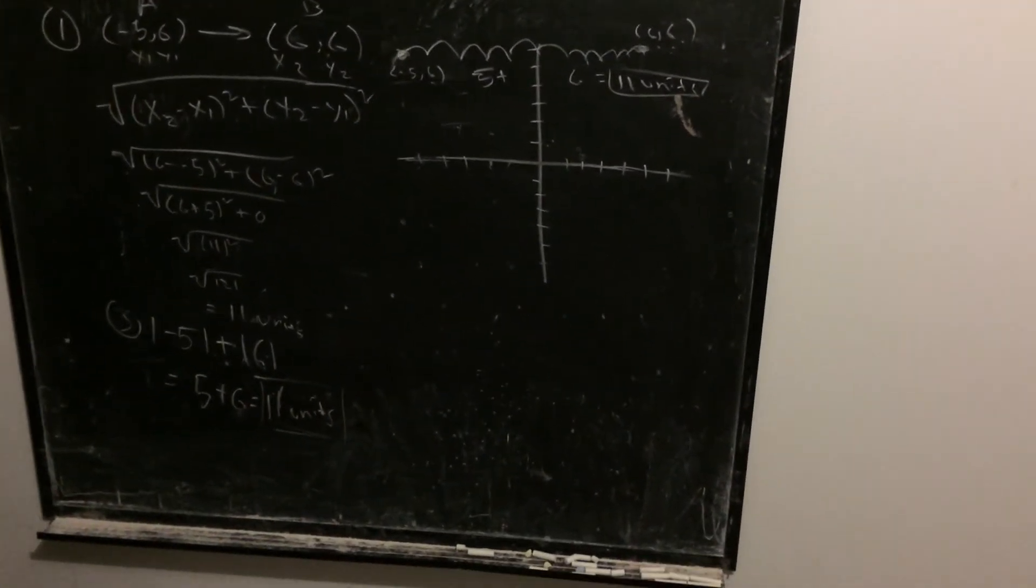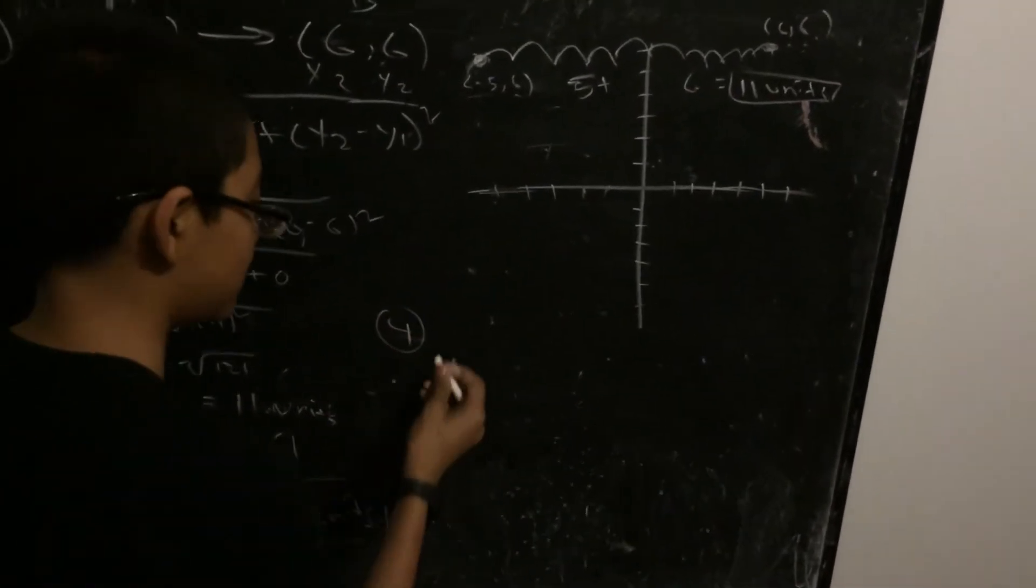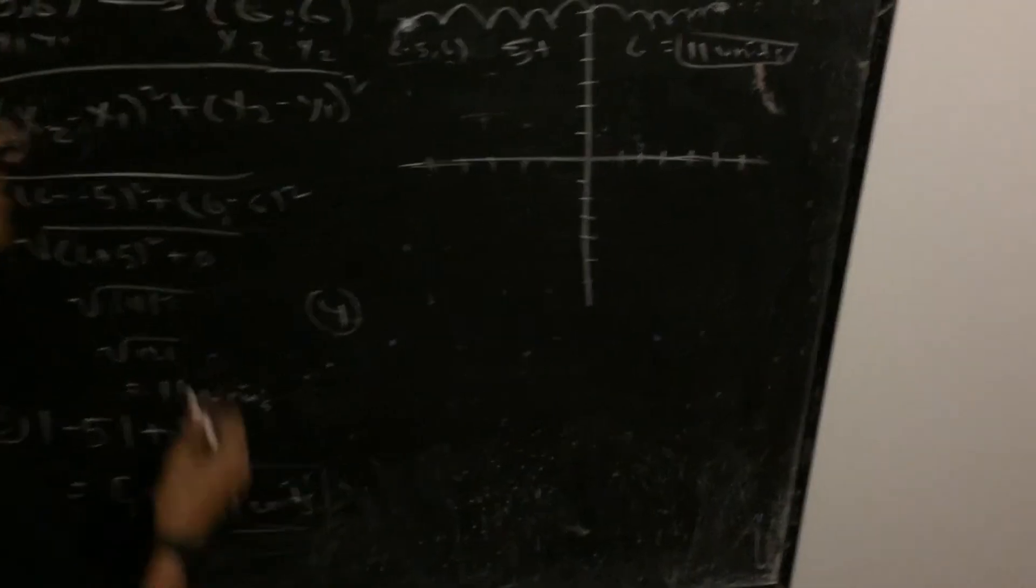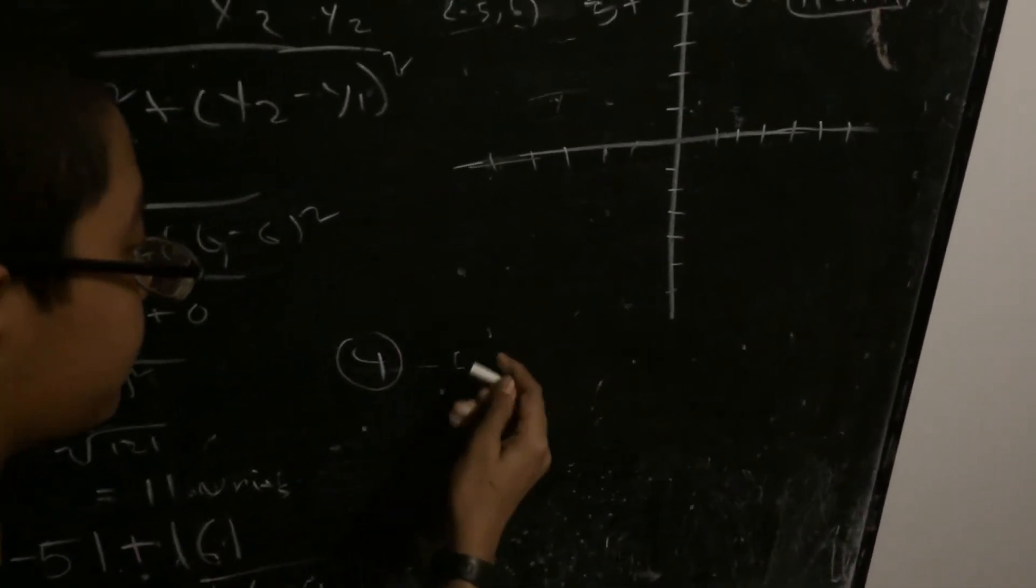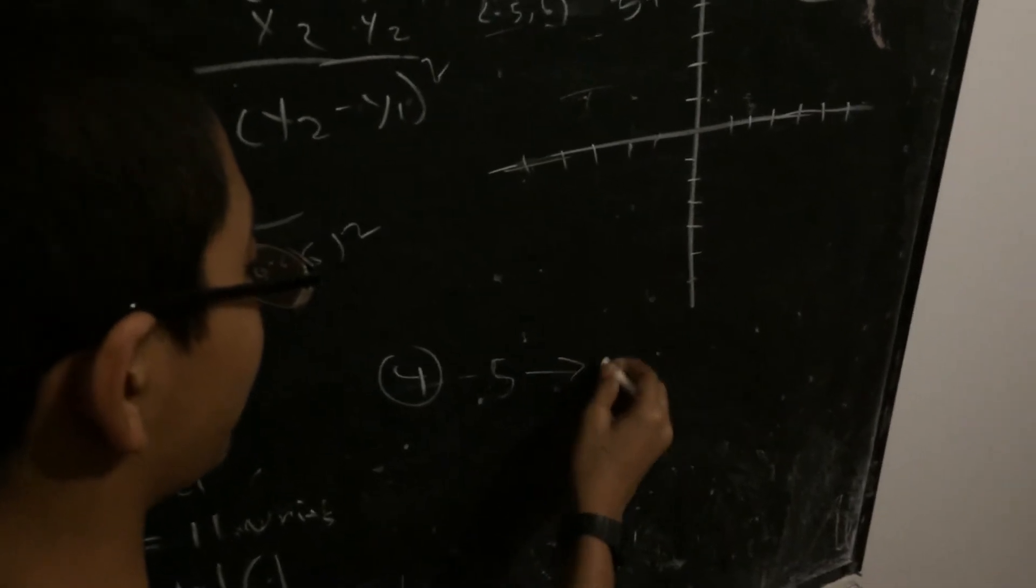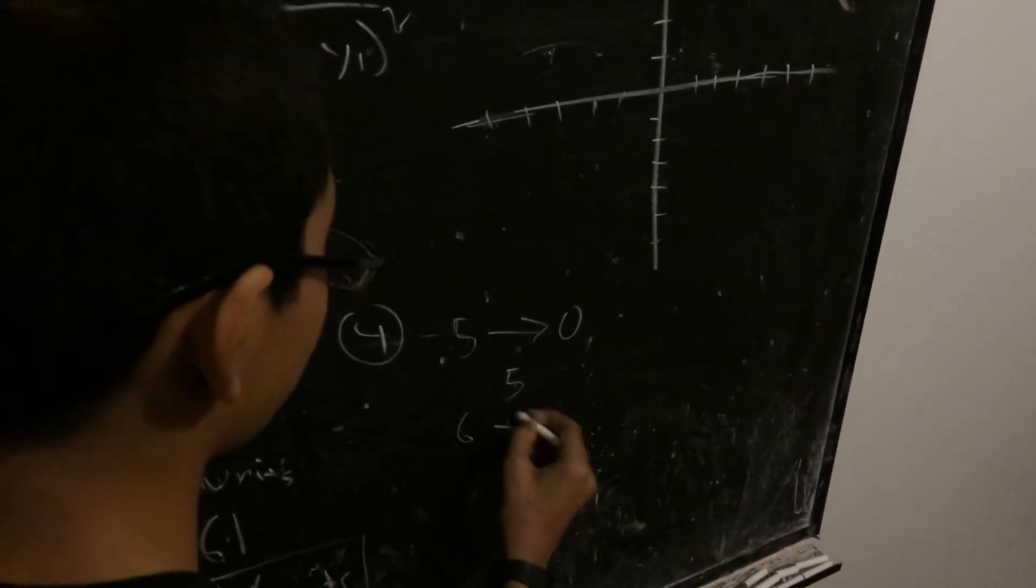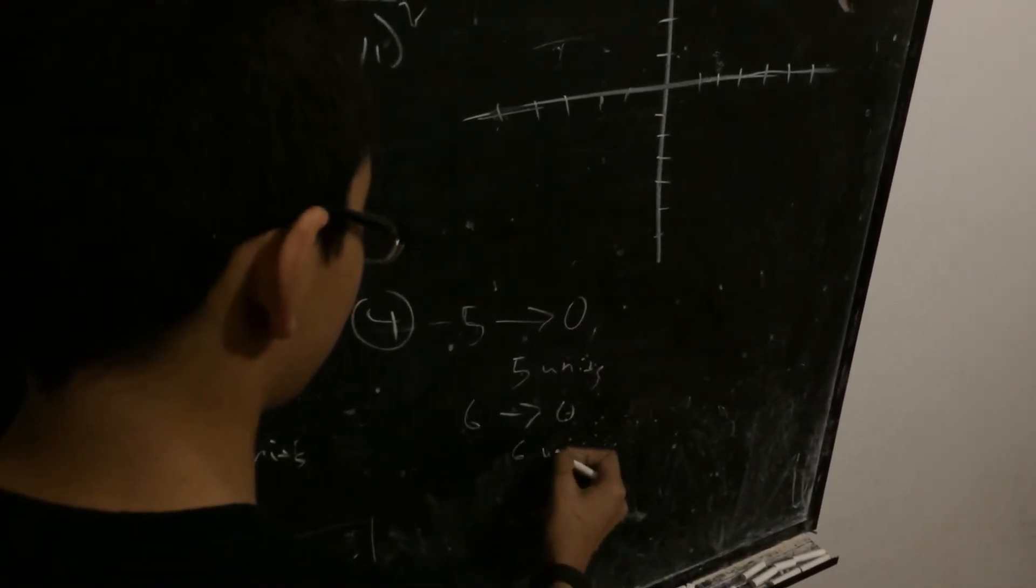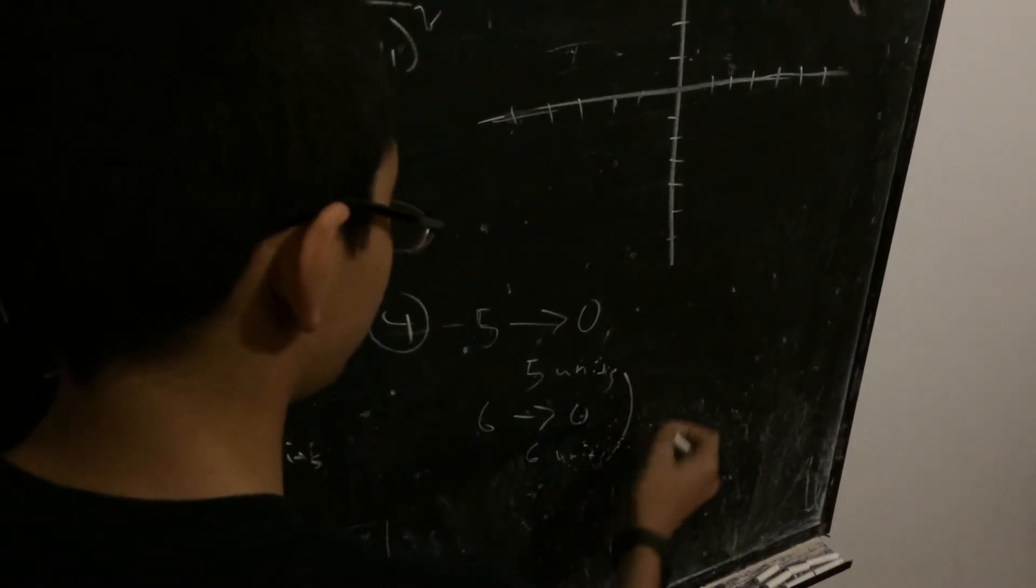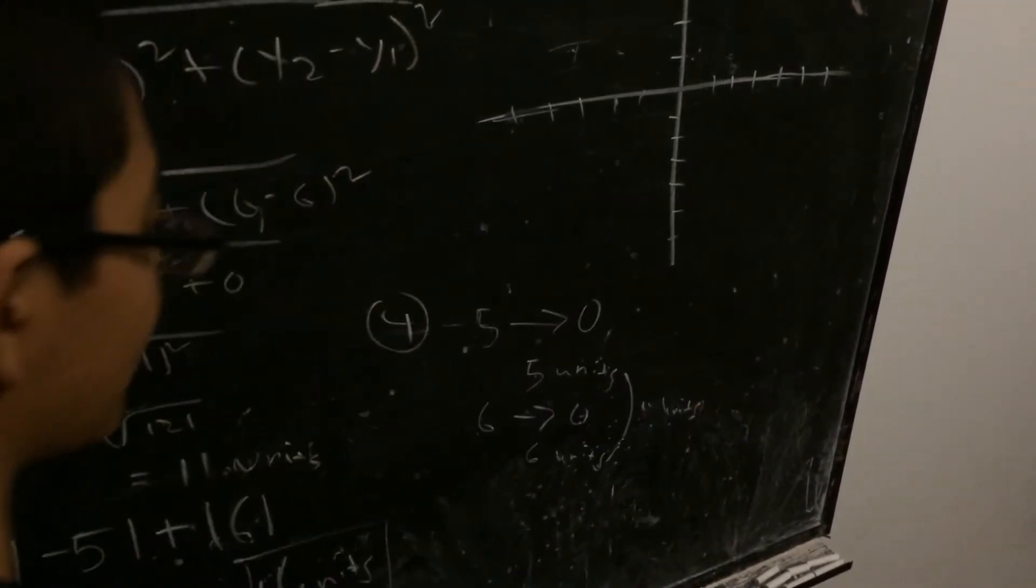You could also just do it mentally. If you have two points, let's do the same two points: negative 5. The distance from negative 5 to 0 is 5 units and the distance from 6 to 0 is 6 units. So in total this is 11 units.